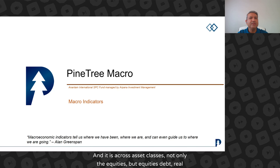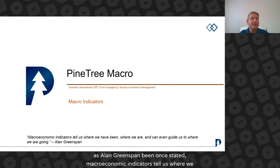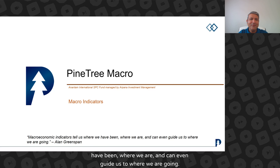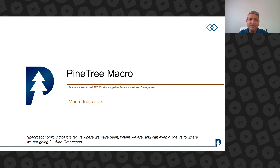And it is across asset classes — not only equities, but equities, debt, real estate, gold, etc. As Alan Greenspan once stated, macroeconomic indicators tell us where we have been, where we are, and can even guide us to where we are going.